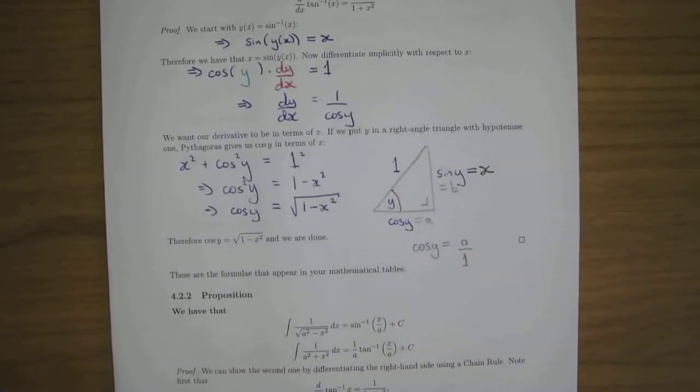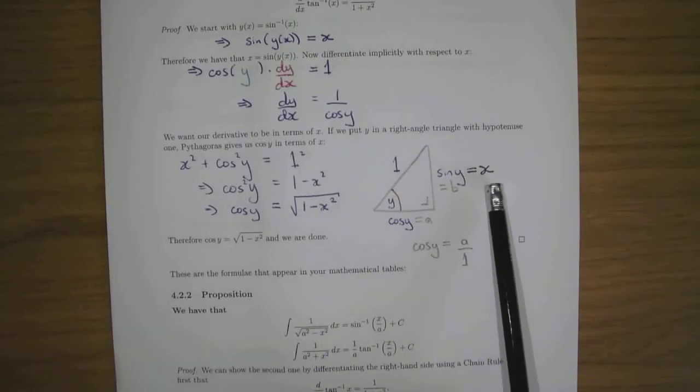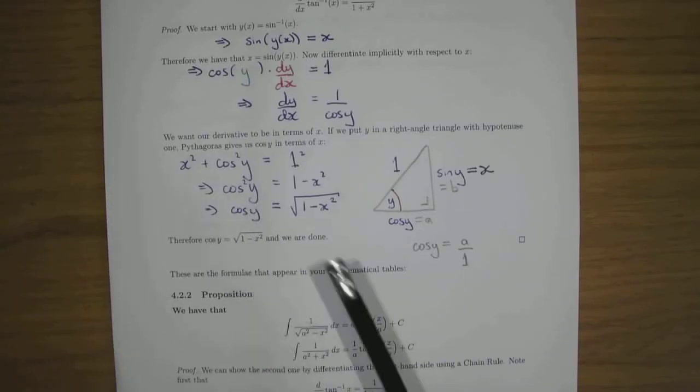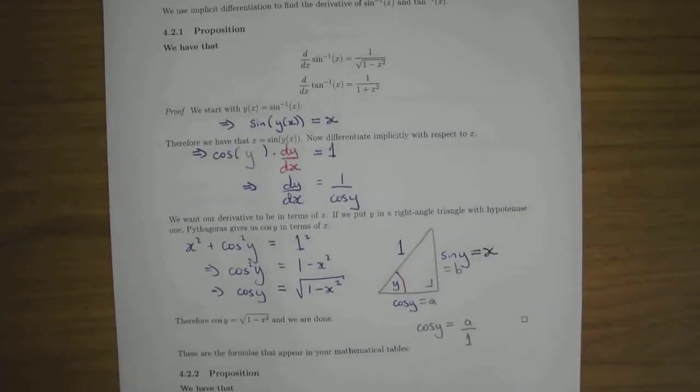Do a little Pythagorean theorem here: x squared plus cos squared is equal to one squared. And then solve for cos of y. You find that cos of y is square root of one minus x squared, and you're done. So use implicit differentiation to find the derivative of inverse sine.